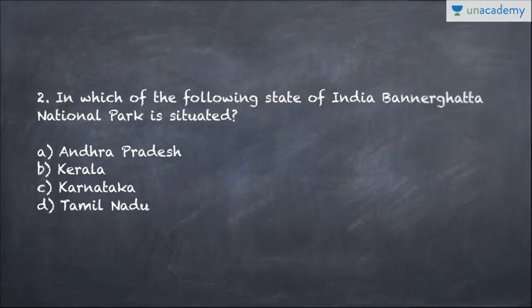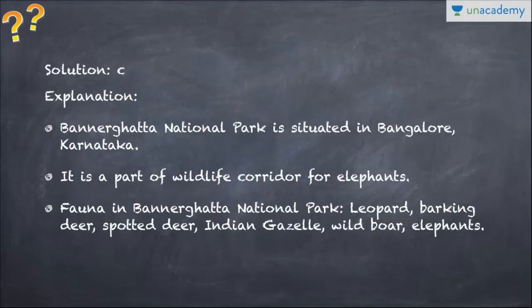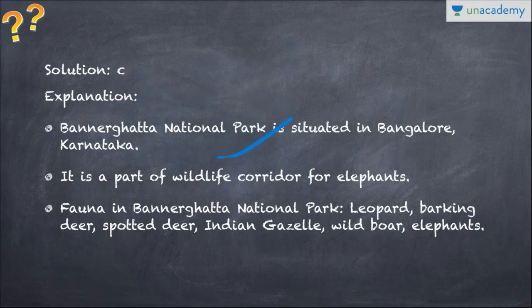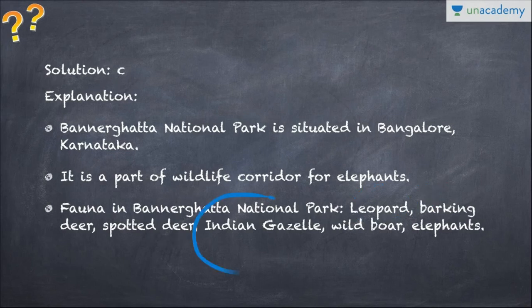Question two: In which state of India is Bannerghatta National Park situated? It is in Karnataka, essentially in Bangalore. To remember: Bannerghatta — Bangalore — Karnataka. It is part of a wildlife corridor for elephants. Animals found here include leopard, barking deer, spotted deer, Indian gazelle, wild boar, and elephants. Key words to remember: Bangalore, Bannerghatta, elephants.